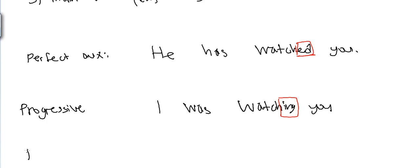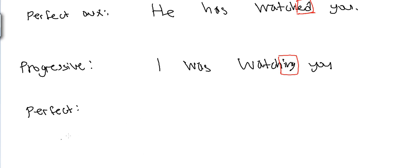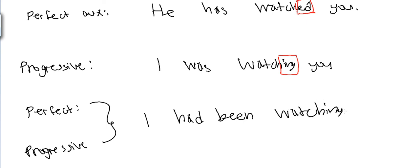Perfect: a part of have, plus -en, surrounding be. And the progressive is a part of be, plus -ing, surrounding watch. An example for this can be: I had been watching you.